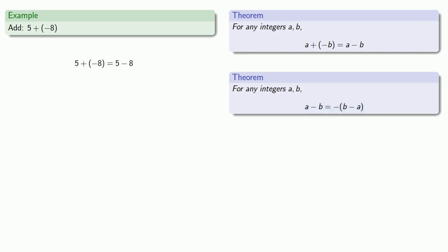So I'll rewrite this as additive inverse of 8 minus 5 and I do know what 8 minus 5 is, that's equal to 3, and so my final answer is additive inverse of 3.